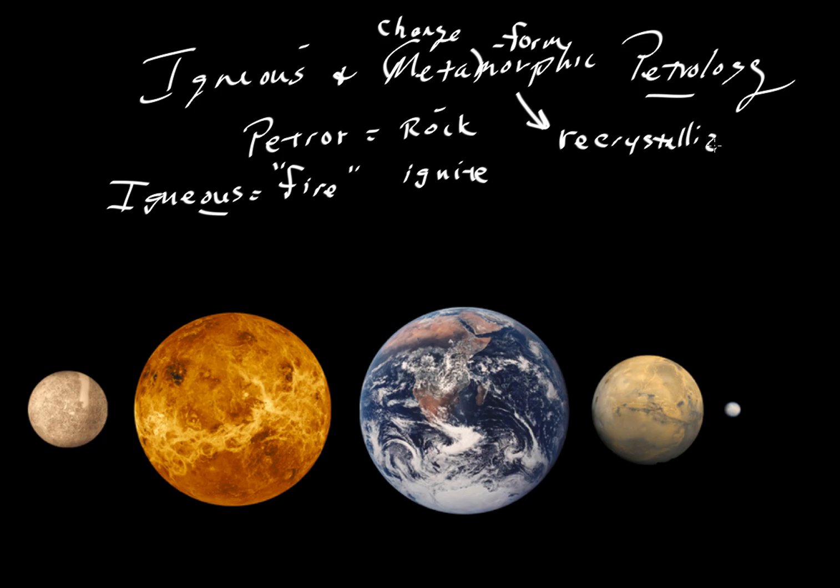So there is some change in the pressure or temperature conditions in which various kinds of igneous or sedimentary rocks exist. And then they recrystallize under those new conditions of pressure and temperature. And when they recrystallize, we get a metamorphic rock.